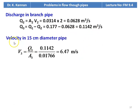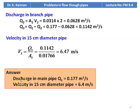Velocity in the 15 centimeter pipe: V3 = Q3 / A3 = 0.1142 / 0.01766 = 6.47 meters per second. The answer: discharge in the main pipeline Q1 = 0.177 m³/s; velocity in the 15 centimeter diameter pipe is 6.47 meters per second.